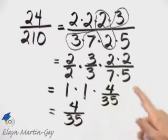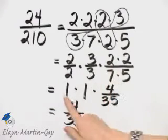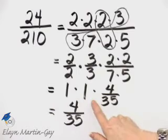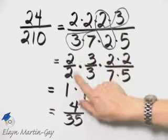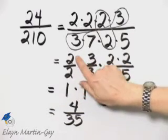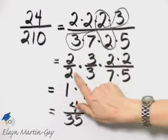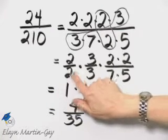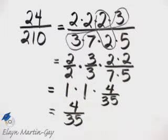To simplify, we are essentially removing factors of 1, and those factors of 1 are represented by the same number on top in the numerator as in the denominator. So we've simplified, and in simplest form, it is 4 over 35.